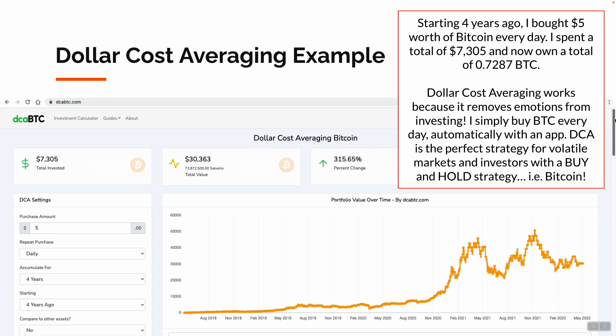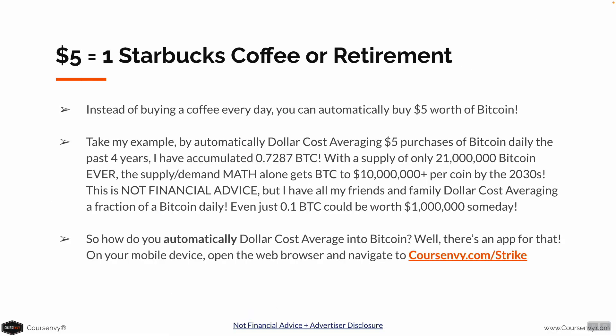Dollar Cost Averaging is the perfect strategy for volatile markets and investors with a buy-and-hold strategy, i.e. Bitcoin. So instead of buying a coffee every day for $5, you can automatically buy $5 worth of Bitcoin.